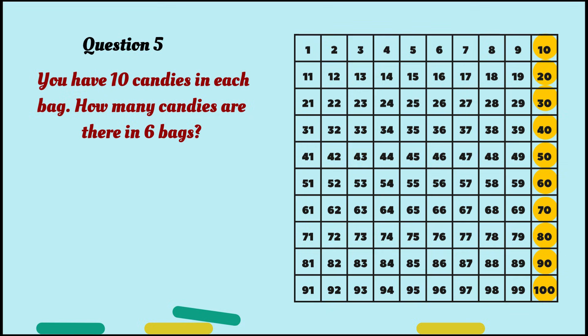So, you can either do 10 times 6, or you can skip count by 10s until you've reached the 6th number. Got it? 10, first number. 20, second. 30, third number. 40, fourth number. 50, fifth number, and 60 is the 6th number. Because there are 6 bags, we can stop it there. So, how many candies are there in 6 bags? Yes! The answer is 60.